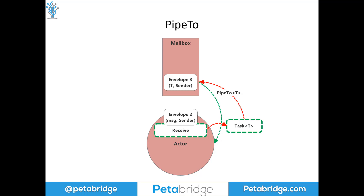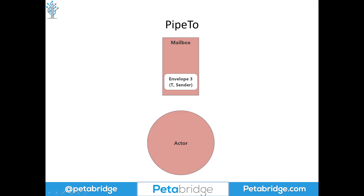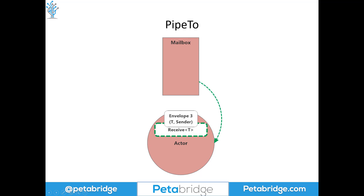That message will be processed likely after the other content already in the mailbox. That's why you can see envelope three with type T queuing up behind message two, which we're currently processing. The actor will use likely a different receive statement to process this message, and we'll be able to essentially interleave some messages ahead of others inside our mailbox. So this is at a theoretical level what our actors are doing with each of these different programming approaches. I'm going to dive into a code sample to show you in practice how these look differently and how they affect actor performance.